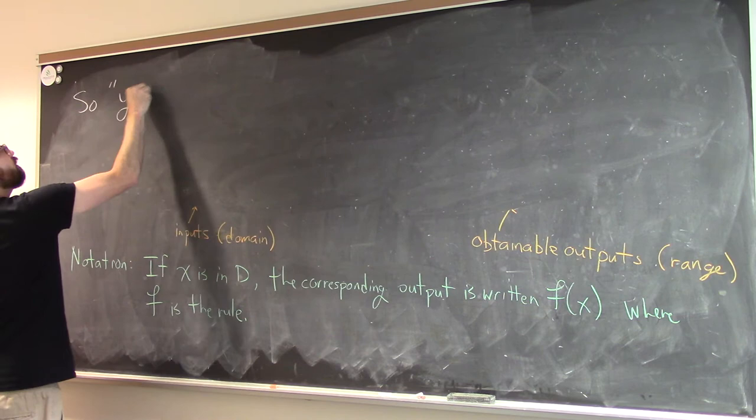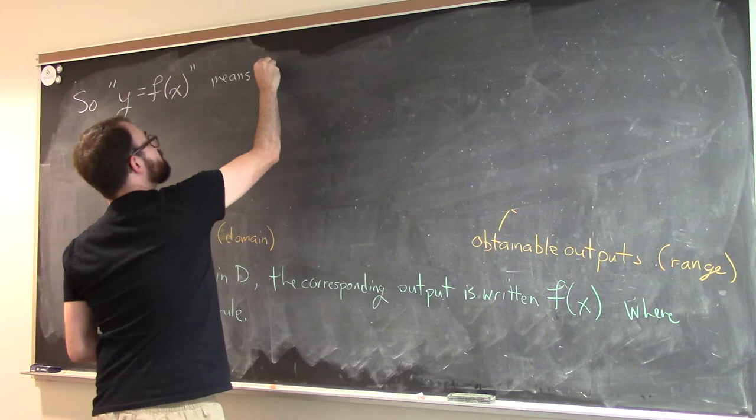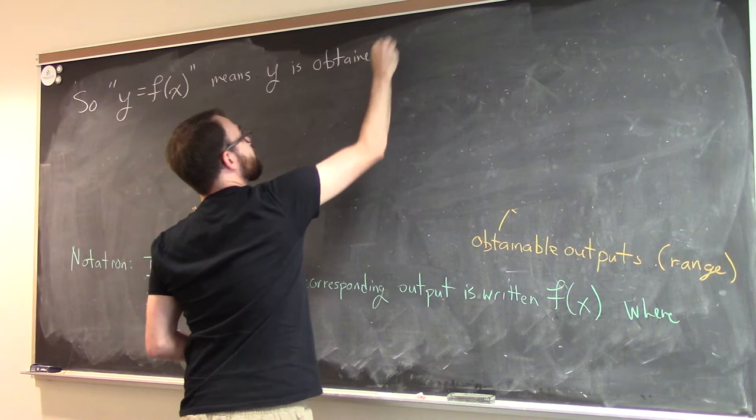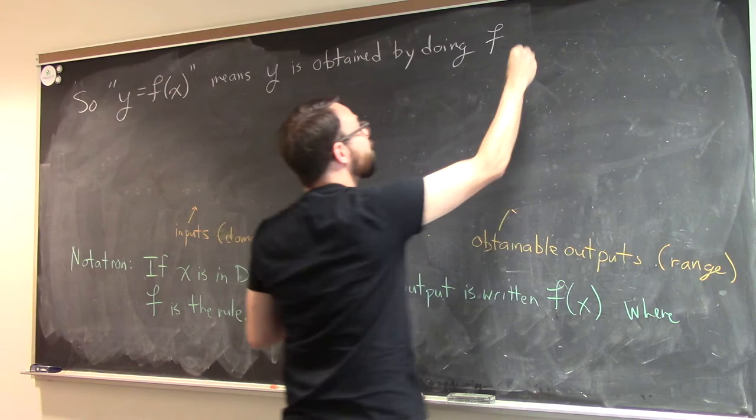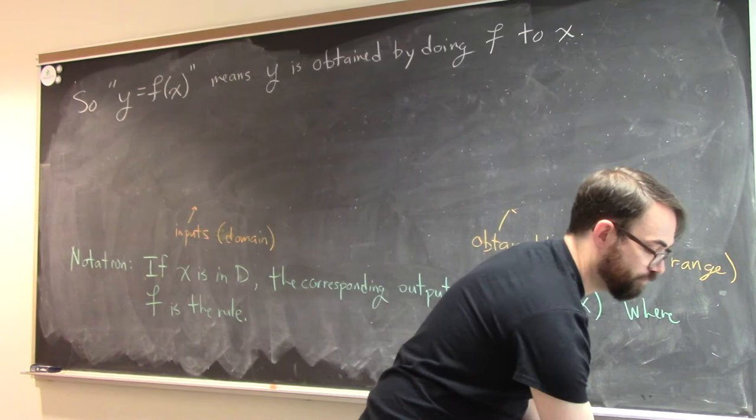So in the past, when you've seen this notation, y equals f of x, this means y is obtained by doing f to x. So you take your input x again, you apply f, and you obtain the output y.